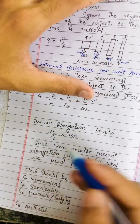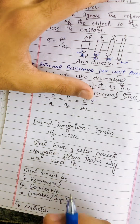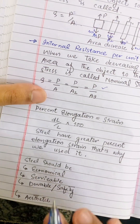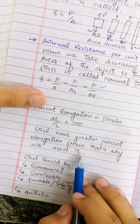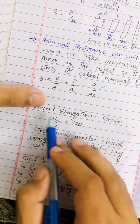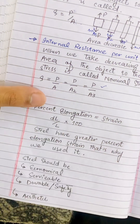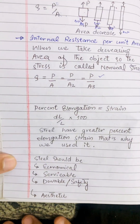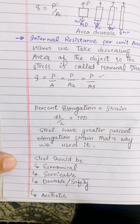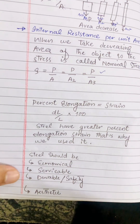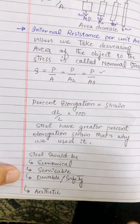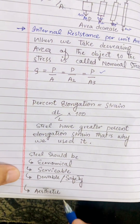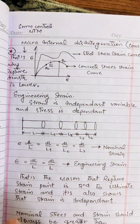Percent elongation is strain multiplied by 100, or elongation per unit length multiplied by 100. We use steel in construction because it is economical, serviceable and easily available, durable and provides safety, and is also aesthetically acceptable from an architectural view.